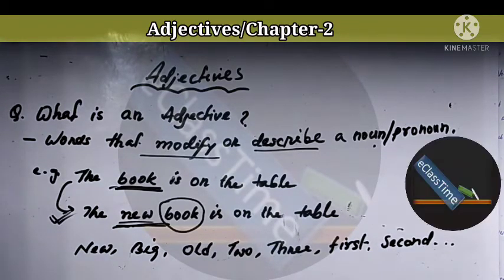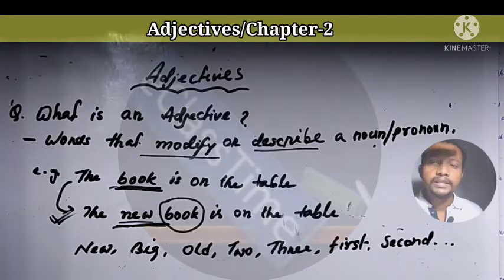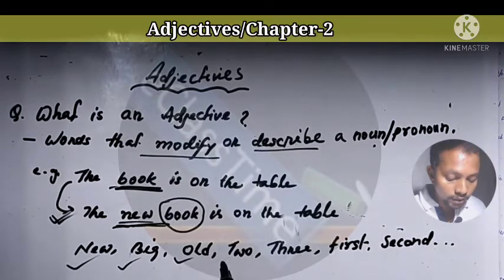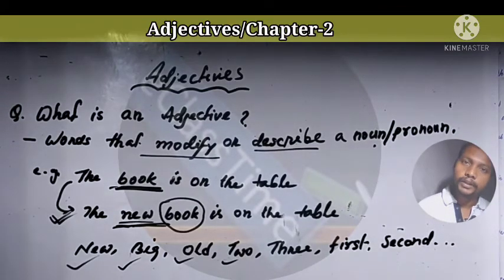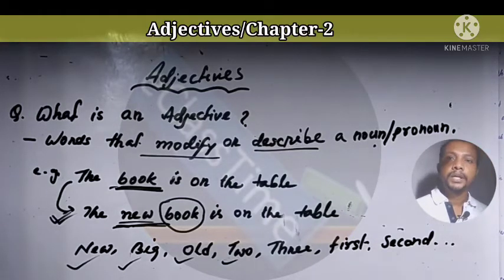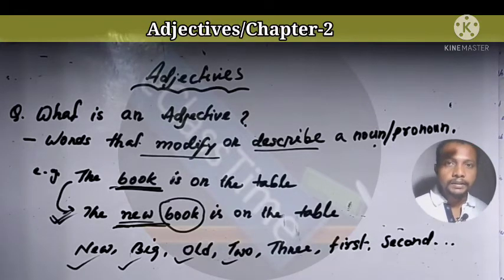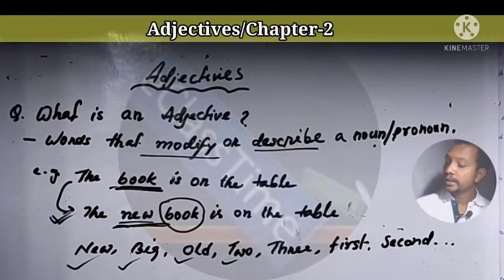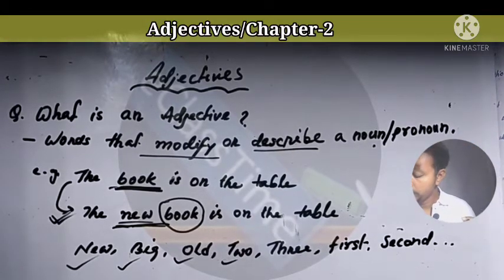With that, we say something about the noun or the pronoun using adjectives. Words like new, big, old, two, three. For example, there is one book, or two books are on the table. Numbers like first, second, third - these are all examples of adjectives.